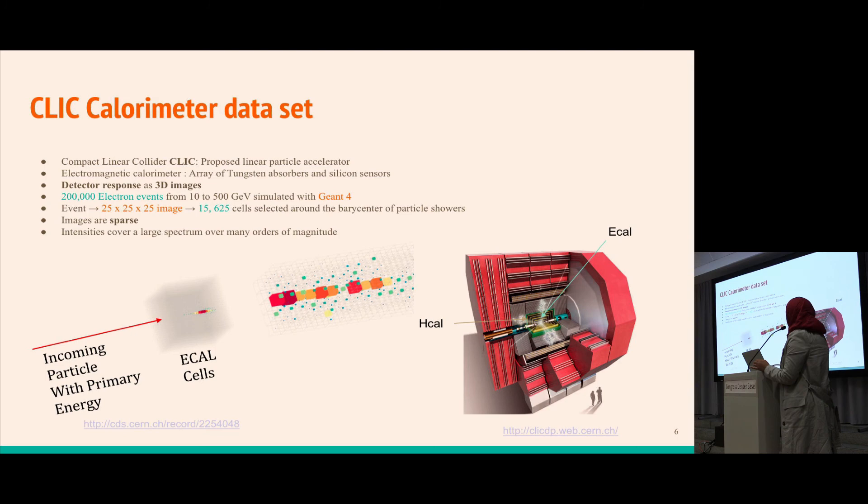The first data we took was for the CLIC calorimeter dataset, a proposed detector for the future. We chose this because it's a highly granular detector. The detector response in a calorimeter can be regarded as a 3D image, with energy depositions left by particles regarded as pixel intensities.